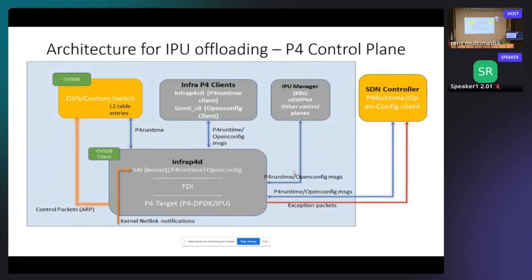This is the architecture for IPU offloading — we call it the P4 control plane. There is an InfraP4D component, which is the main component we have created. It is open-sourced under IPDK and under the networking recipe GitHub. There are three interfaces to the external SDN controller and CLIs from InfraP4D: P4 runtime, OpenConfig, and an SCI-kernel interface that we implemented to offload kernel elements into the hardware. The SCI element listens to kernel notifications coming in for routing tables and tunnel tables, and offloads them into the IPU using TDI.